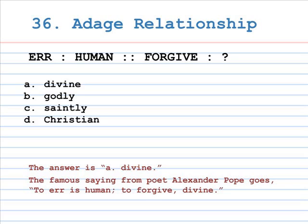Number 36: adage relationship. Err is to human, as Forgive is to A. Divine, B. Godly, C. Saintly, D. Christian. The correct answer is A, Divine. The famous saying from poet Alexander Pope goes: 'To err is human, to forgive divine.'